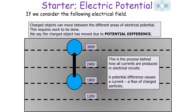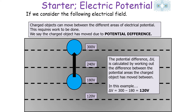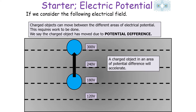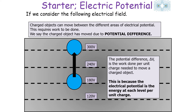The potential difference, or delta V, is calculated by working out the difference between the potential areas the charged object is moved between. In this example the potential difference is 300 volts minus 180 volts, giving 120 volts. A charged object in an area of potential difference will accelerate — this was covered previously when we looked at charged particles in electrical fields, where a potential difference between two plates caused the particle to accelerate.